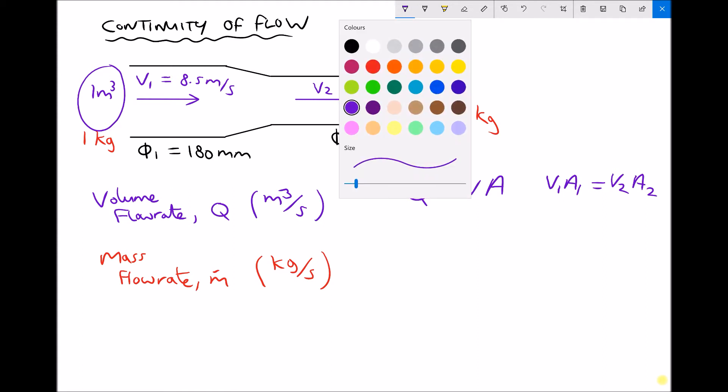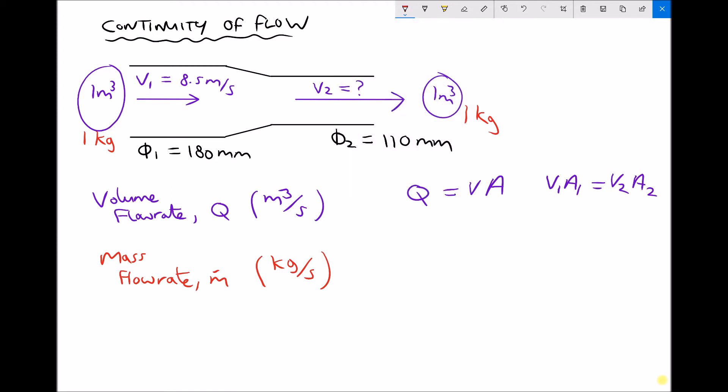Now for mass flow rate we have one simple equation. Mass flow rate is just density times volume flow rate. Or said a different way we could say it's density times velocity times area.